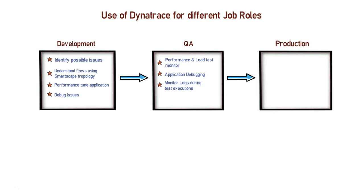I hope now you have a basic understanding on how a QA engineer can start using Dynatrace. In fact, Dynatrace can be useful in many more ways than mentioned here. Next, let's see how Dynatrace can be useful for production support, operations, and DevOps engineers. Almost every feature in Dynatrace can be useful for these job roles. Production support, operations, and DevOps are the ones who make sure your application is running smoothly in production without any issues. That's why an environment monitoring tool like Dynatrace can be a great asset to these people.